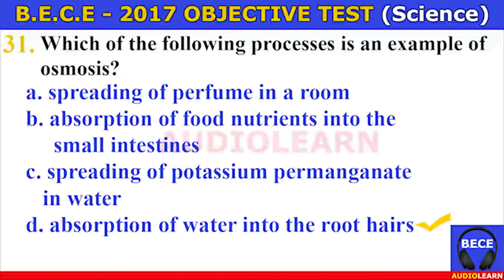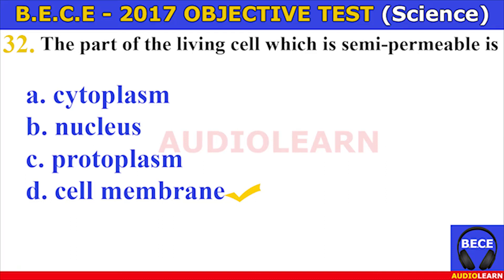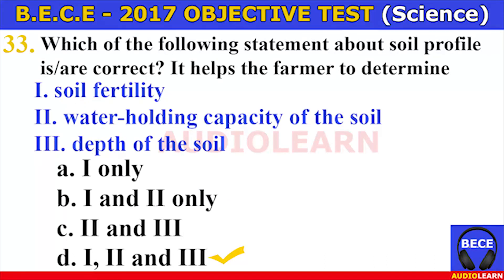Number thirty-one. Which of the following processes is an example of osmosis? A. Spreading of perfume in a room, B. Absorption of food nutrients in the small intestines, C. Absorption of water into the root hairs. The answer is D. Absorption of water into the root hairs. Which of the following processes is an example of osmosis? Absorption of water into the root hairs.